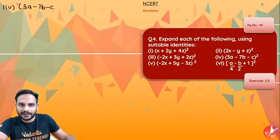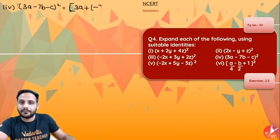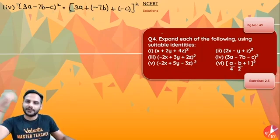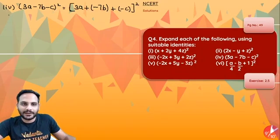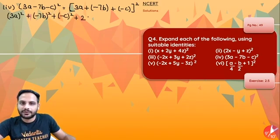The fourth one is (3a − 7b − c)². I can write this as (3a + (−7b) + (−c))², so it is again (a + b + c)² form. It will be equal to (3a)² + (−7b)² + (−c)² + 2·3a·(−7b) + 2·(−7b)·(−c) + 2·3a·(−c).